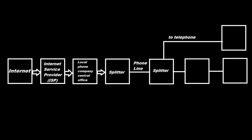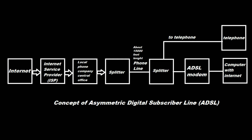There is a phone line between both splitters. The splitter splits two frequencies: one goes to the telephone and one goes to the ADSL modem. The ADSL modem is connected to a computer which provides internet. Asymmetric Digital Subscriber Line — ADSL.